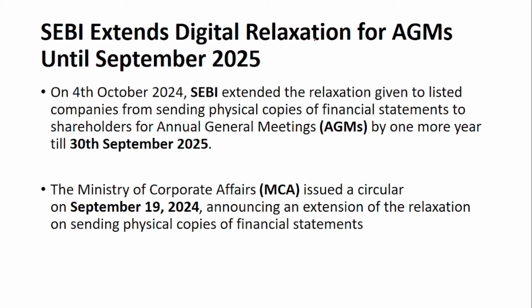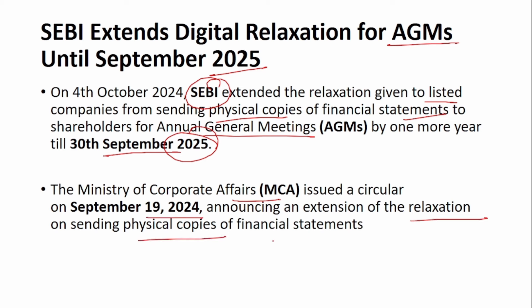Next: SEBI extends digital relaxation for AGMs until September 2025. AGM is an Annual General Meeting. Previously, physical copies of financial statements had to be sent to shareholders, but this was relaxed. On October 4, 2024, SEBI extended the relaxation given to listed companies from sending physical copies of financial statements to shareholders for annual general meetings by one more year — until September 30, 2025. The Ministry of Corporate Affairs issued a circular in September 2024 announcing this extension.